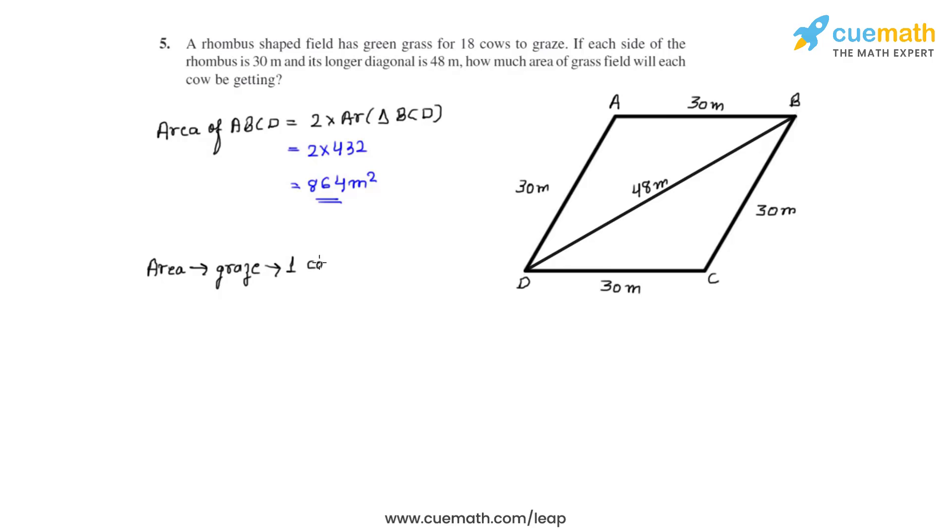The area to graze for one cow will be equal to—we divide the total area, which is 864 meter square, by the number of cows, which is 18. So the area that each cow will be getting to graze will be equal to 48 meter square, and this is the answer for this question.